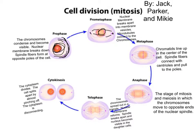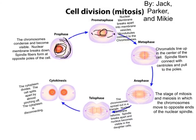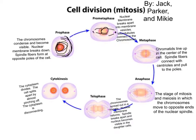Then to the next phase, metaphase. The chromatids line up in the center of the cell. Then the spindle fibers connect with the centrioles, pulling them to the poles.